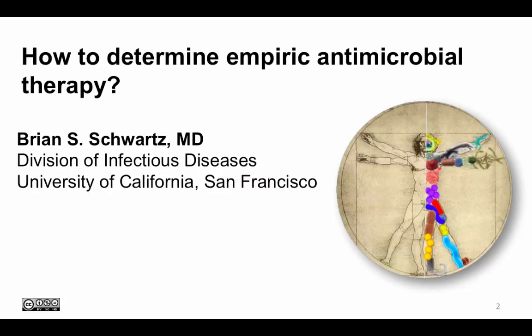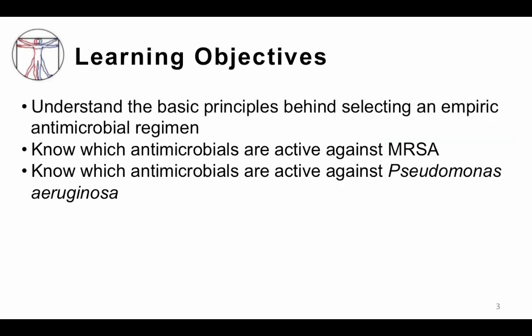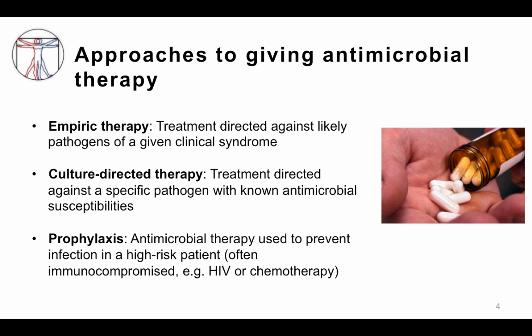This is Brian Schwartz from the University of California San Francisco. I'm going to talk about how to determine empiric antimicrobial therapy in a patient with a suspected infection. Learning objectives are to understand the basic principles behind selecting an empiric antibiotic regimen, knowing how to de-escalate once you have a pathogen, know which antimicrobials are active against methicillin-resistant Staph aureus, and know which antimicrobials are active against Pseudomonas aeruginosa.